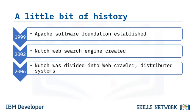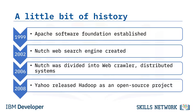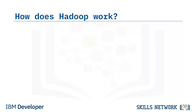In 2006, Cutting joined Yahoo with the Nudge project and the project was divided into the web crawler and distributed processing. The distributed processing segment was called Hadoop, and in 2008, Yahoo released Hadoop to the Apache Software Foundation. Data is now in petabytes and exabytes, and big data is the term used to explain the complexity of the data.